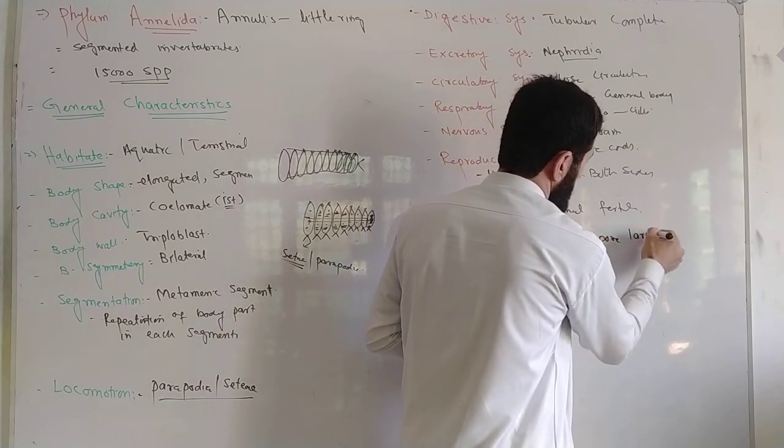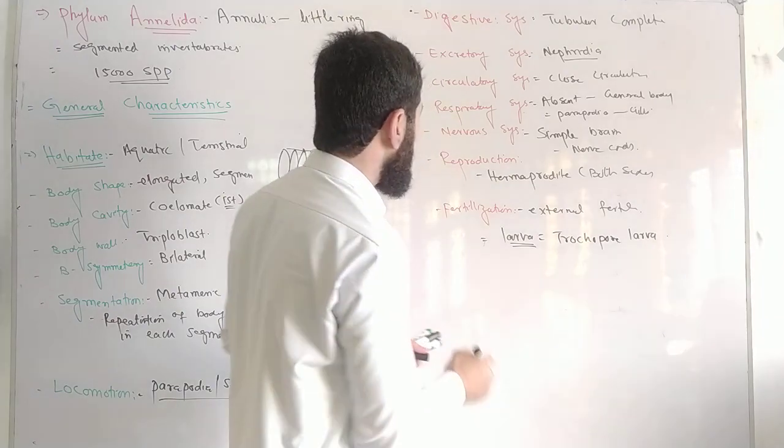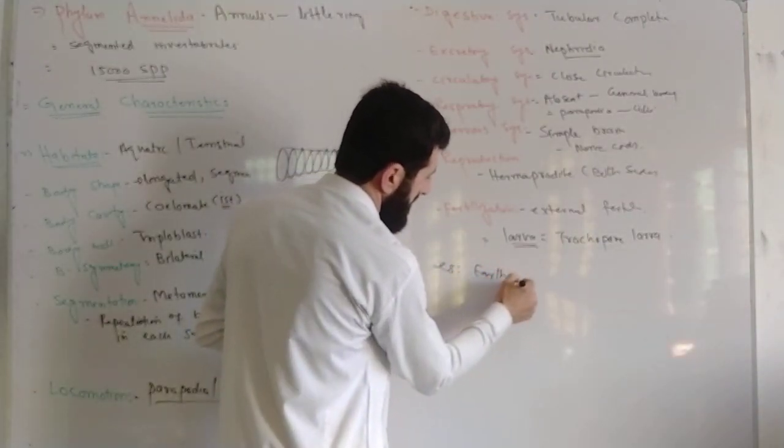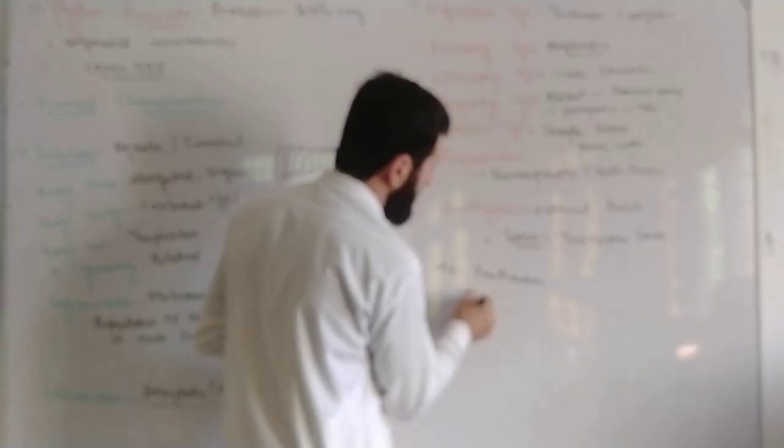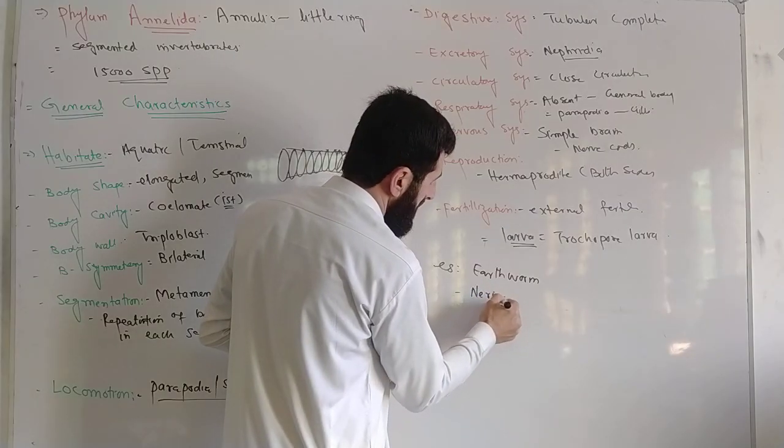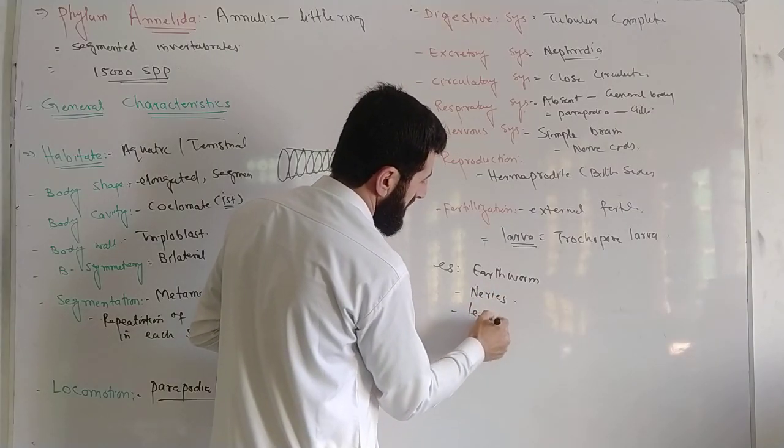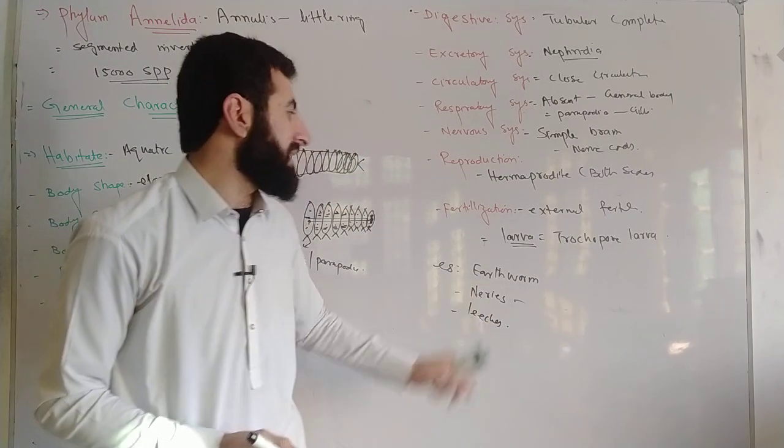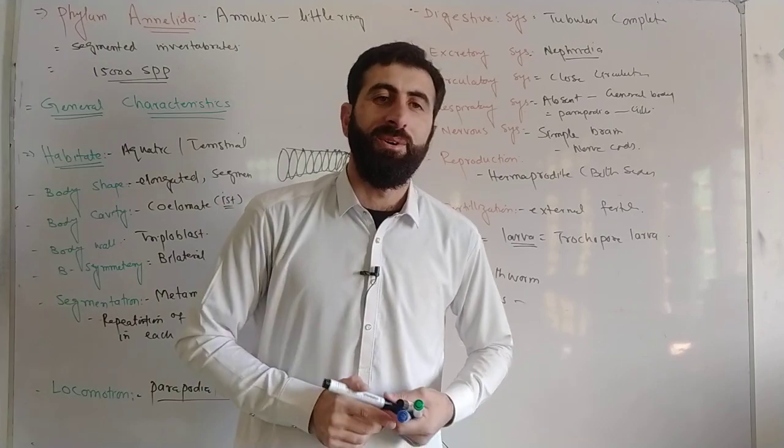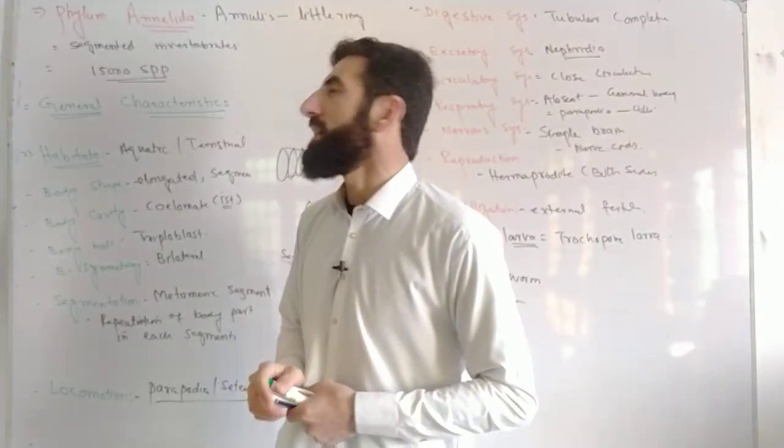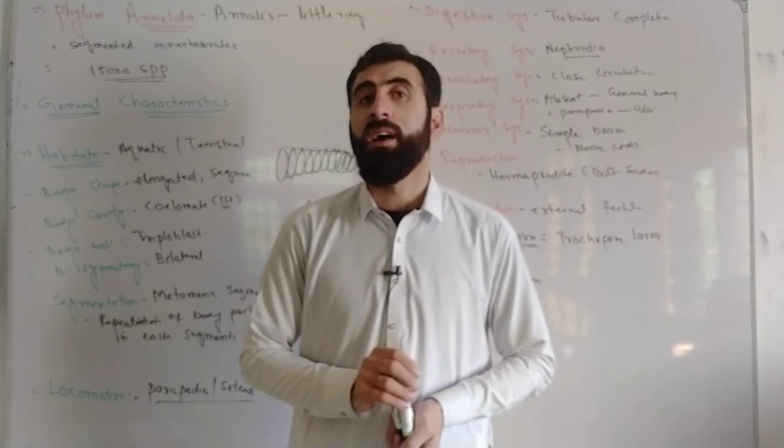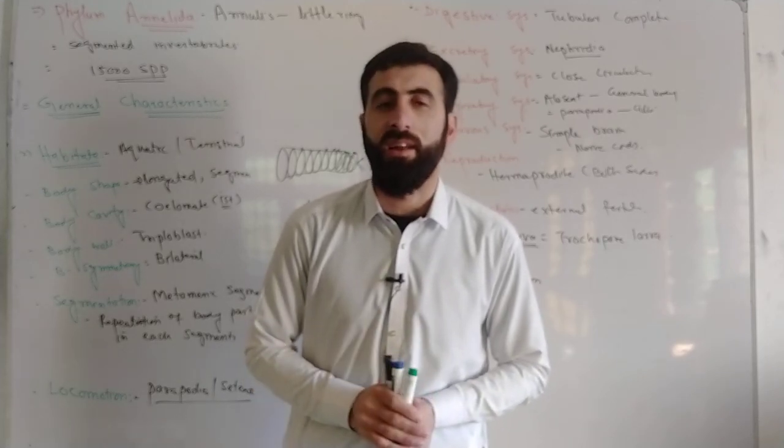Trochophore larva. The examples: earthworm, Nereis, leeches. So these are all about Phylum Annelida. Hope you understand better. Keep us in your prayers. Take care. Allah Hafiz.